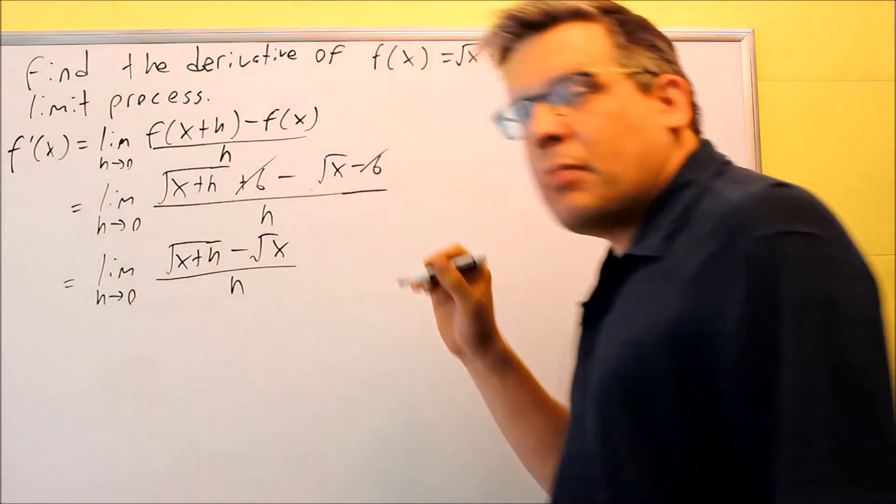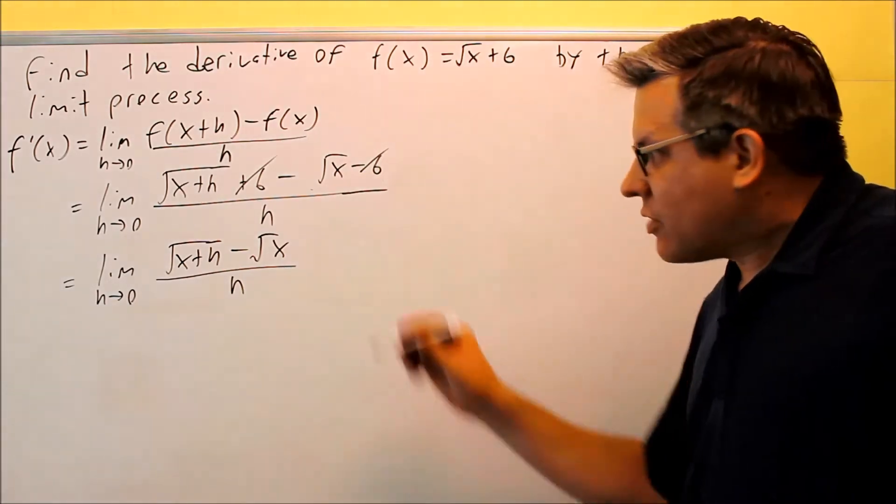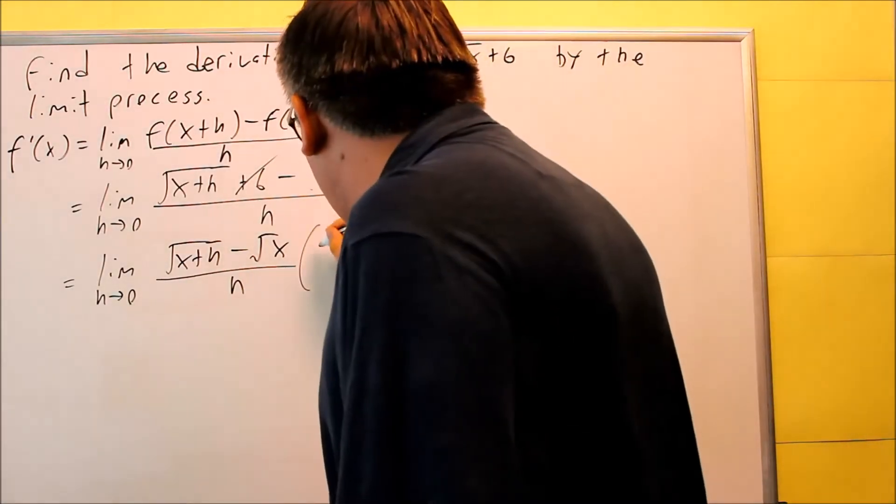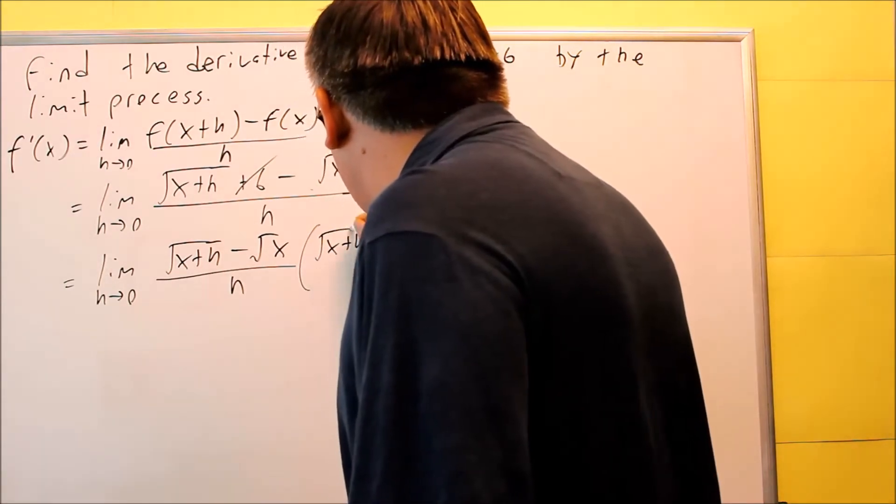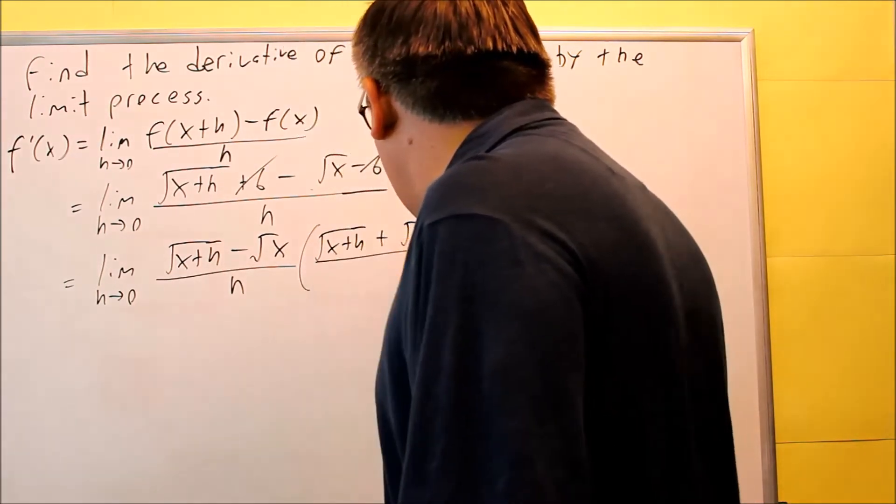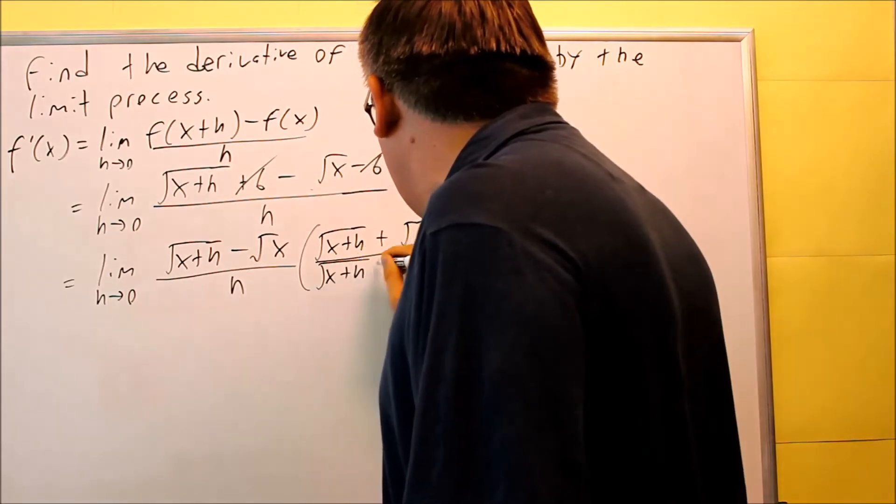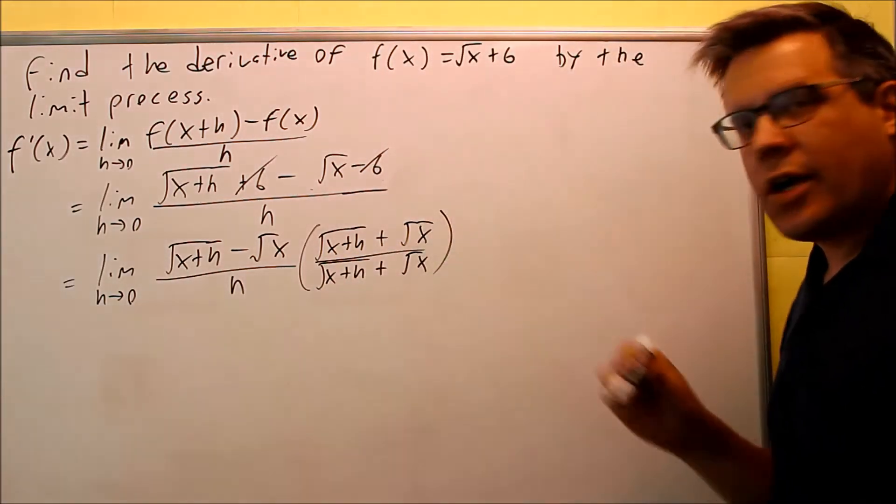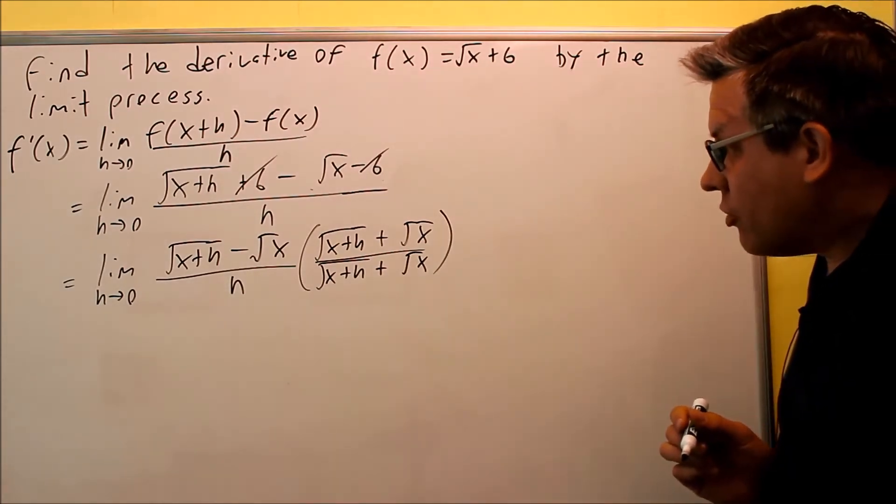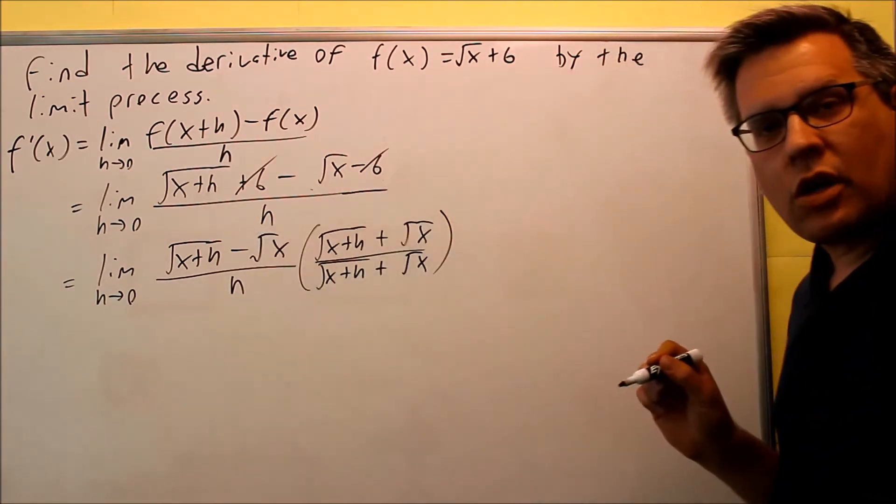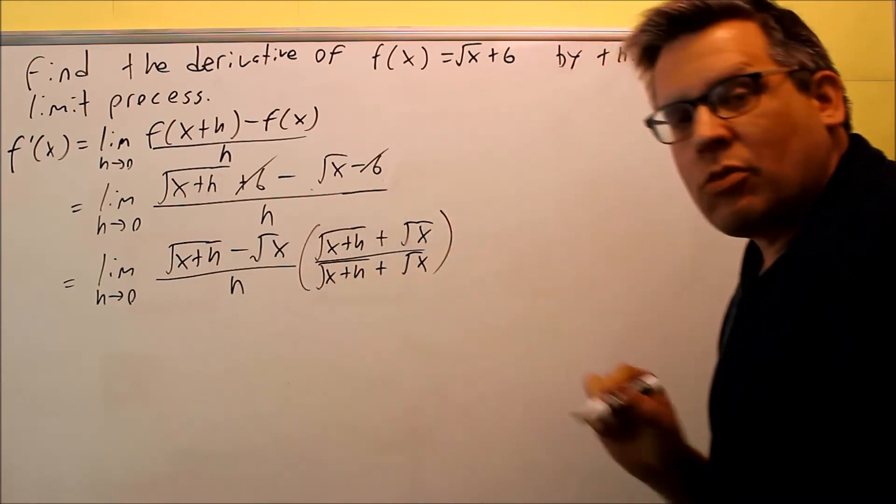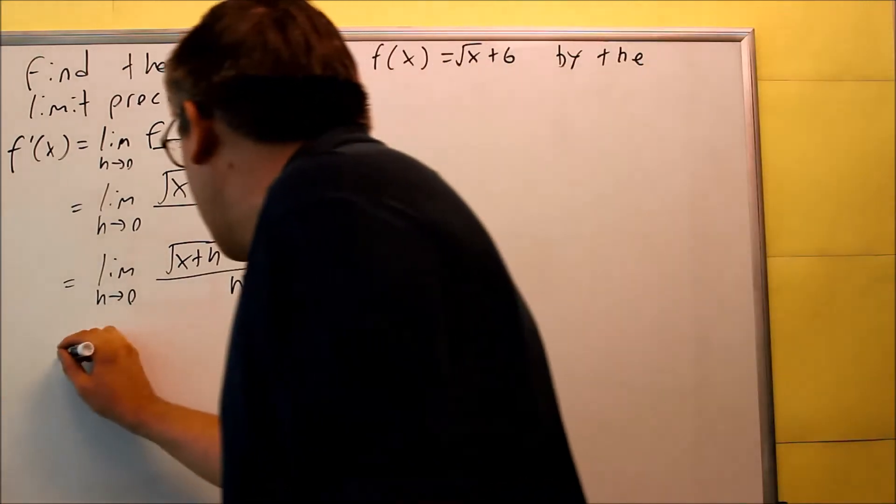We're going to multiply top and bottom by the conjugate. That's the technique whenever you have square roots involved. So conjugates, you're going to do square root of x plus h plus square root of x. Do the same thing on the bottom. So top and bottom, you're multiplying by that. We're going to do conjugates because that's a way we can clear everything out, and hopefully we should end up with an h that we can cancel out with the bottom. Let's work it out and make sure.